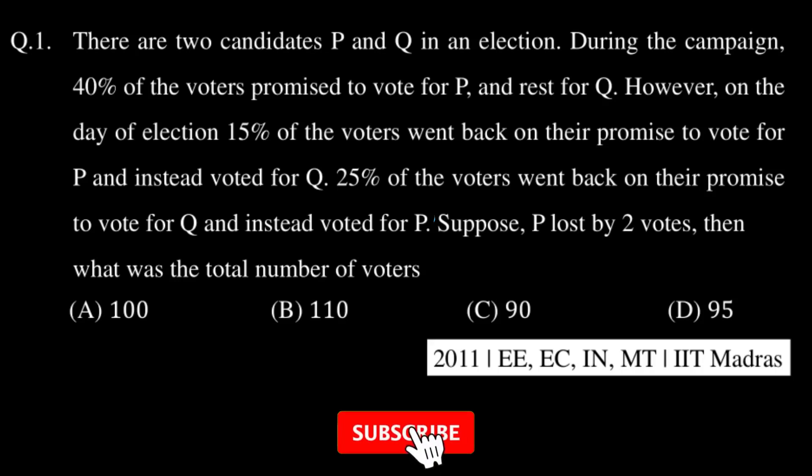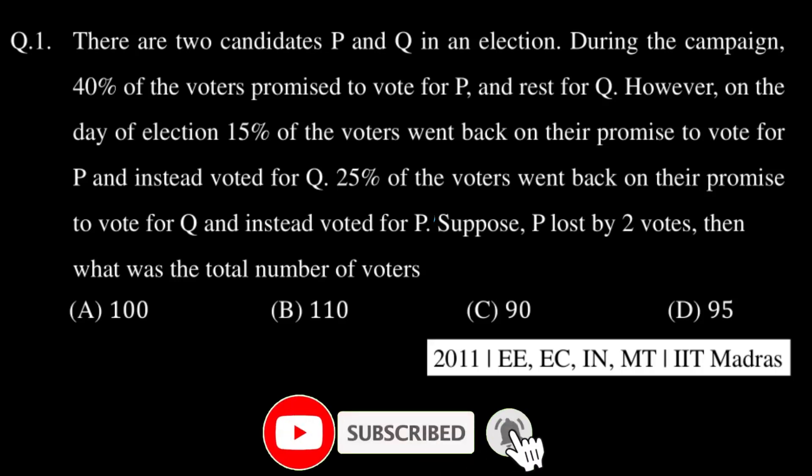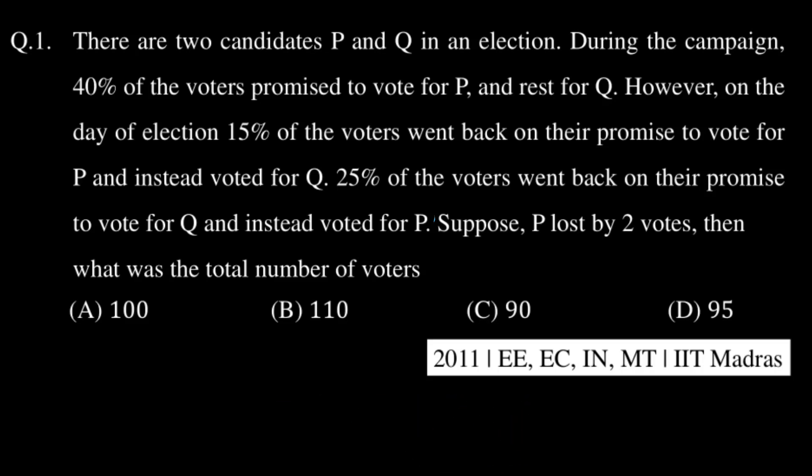The question is that there are two candidates P and Q in an election. During a campaign, 40% of the voters promised to vote for P and the rest for Q. However, on the day of election, 15% of the voters went back on their promise to vote for P and instead voted for Q, and 25% of the voters went back on their promise to vote for Q and instead voted for P. Suppose P lost by two votes, then what was the total number of voters?